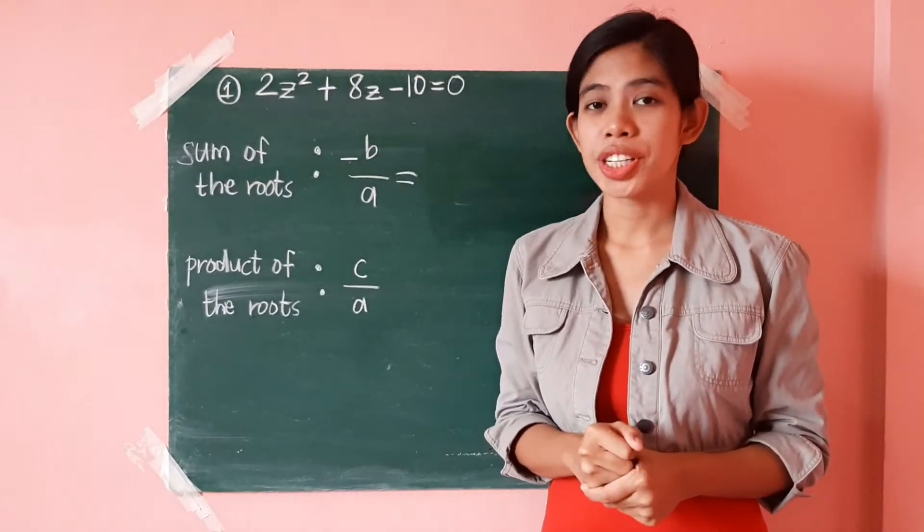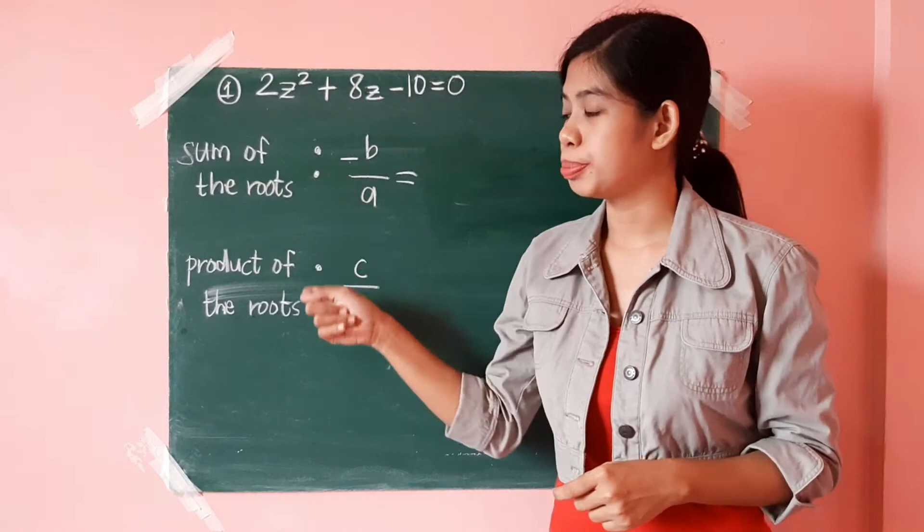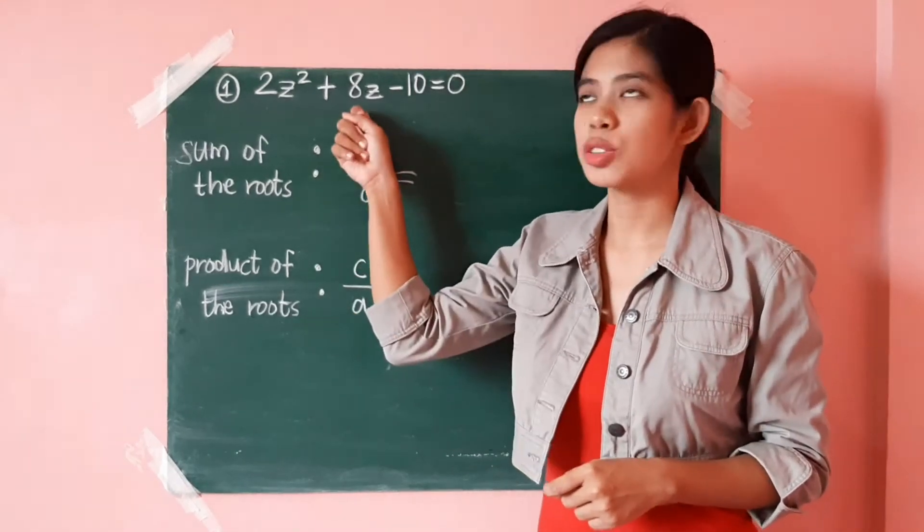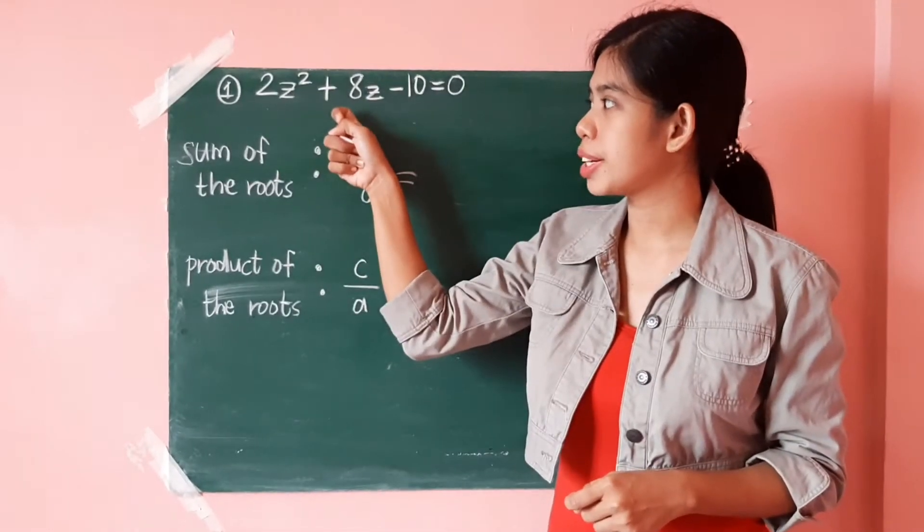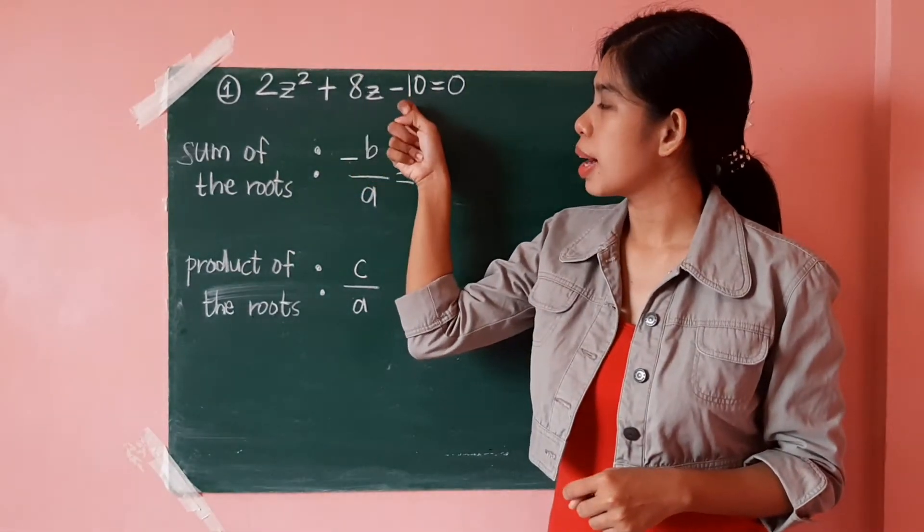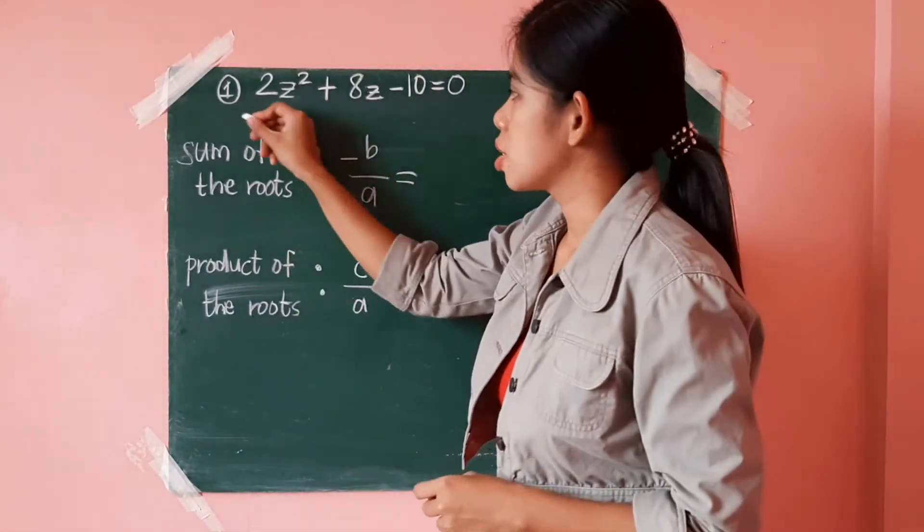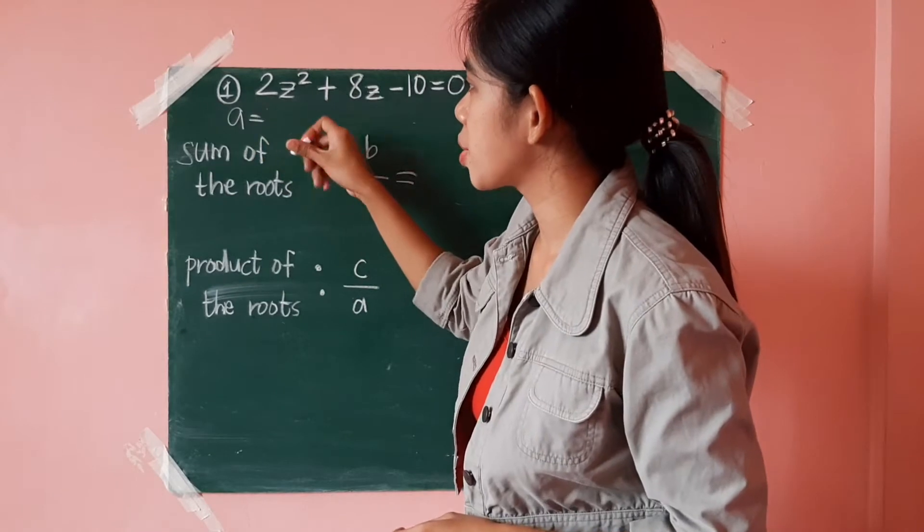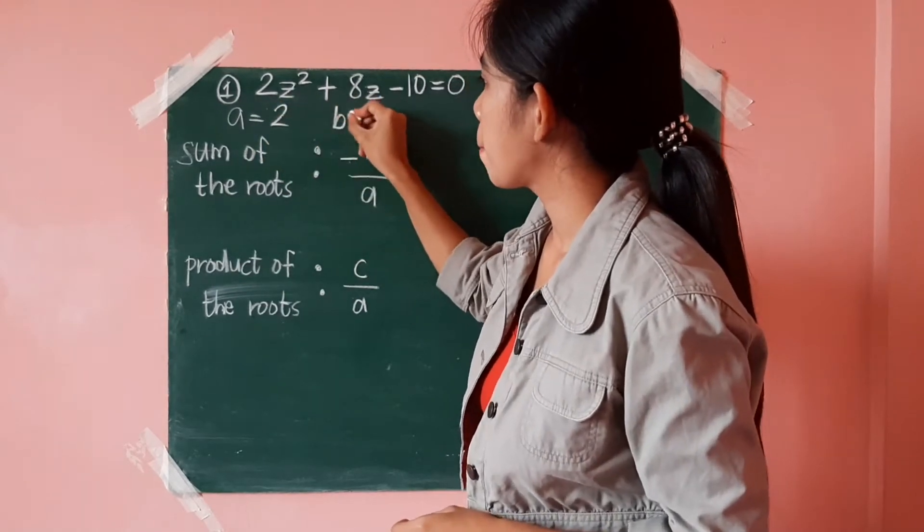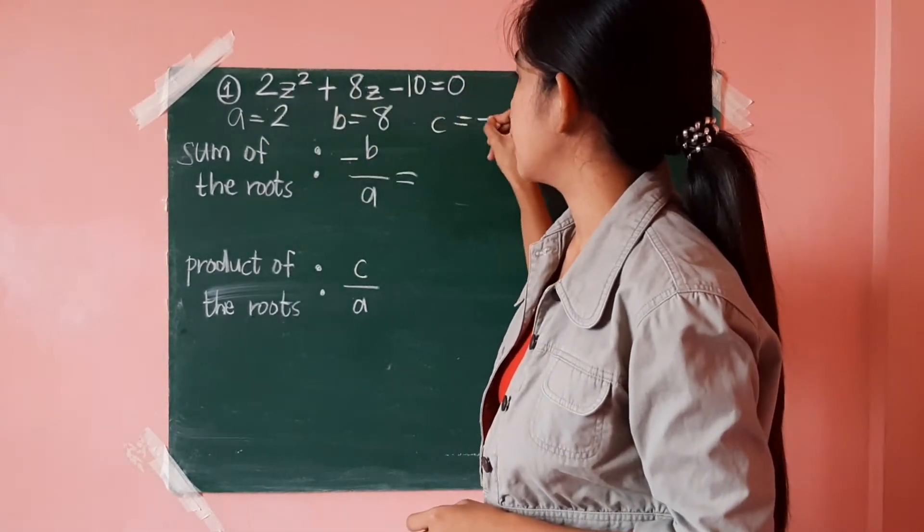Let us now try to find out the sum and product of the roots of this quadratic equation. So, you were given 2z squared plus 8z minus 10 equals 0. So, let us first identify the values of a, b, and c.